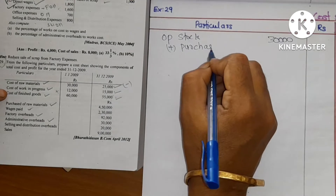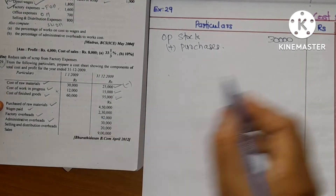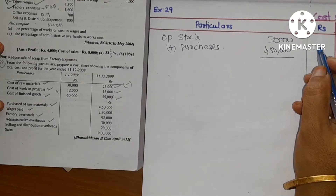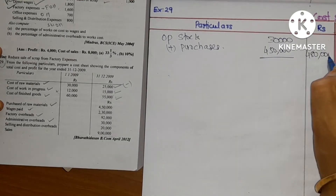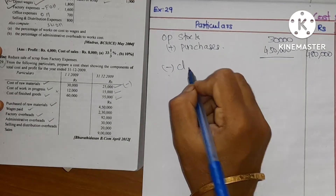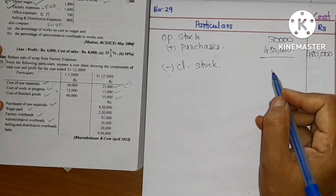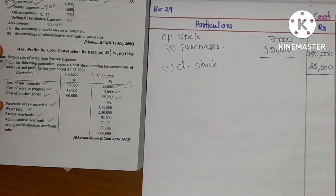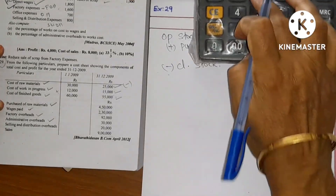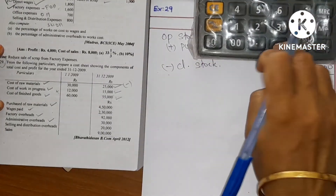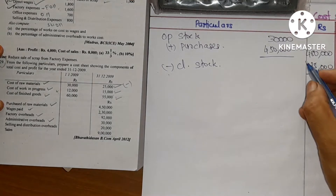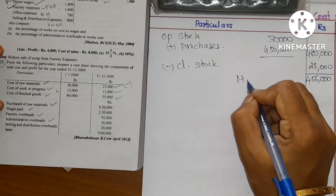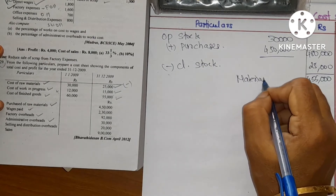The purchase is 4,50,000. We have opening stock of 4,80,000. The closing stock is 25,000, so 4,80,000 minus 20,000 gives us 4,55,000. So the material consumed is 4,55,000.